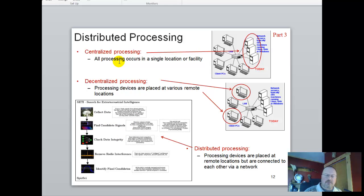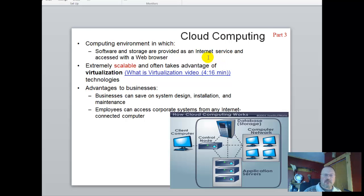So three main kinds of processing, centralized, decentralized, and distributed. Now, cloud computing, we hear that term a lot. So a cloud computing environment is one in which software and storage are provided as an Internet service and accessed with a web browser. It's extremely scalable, which means it can really grow with whatever the need is. So scalable and often takes advantage of virtualization. Virtualization is where you can put a number of machines virtually or a number of operating systems virtually onto one server. I have actually a really good video that talks about virtualization. And it's well worth the time to spend thinking about it.